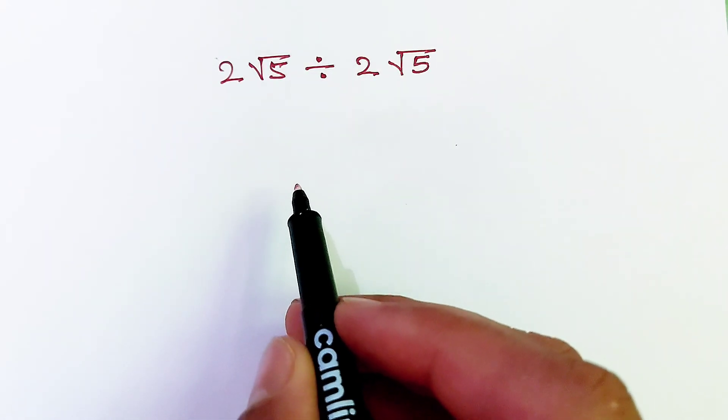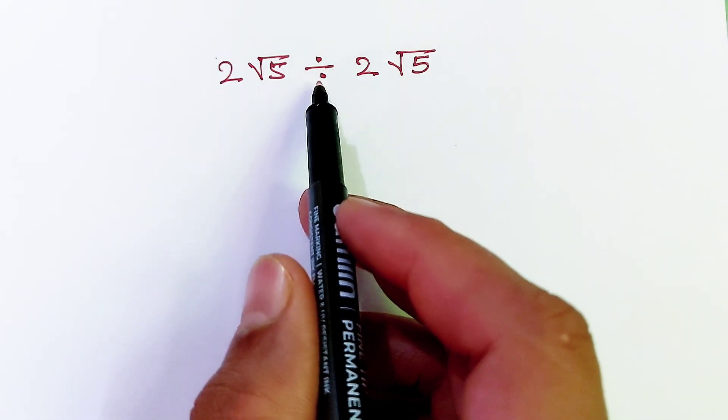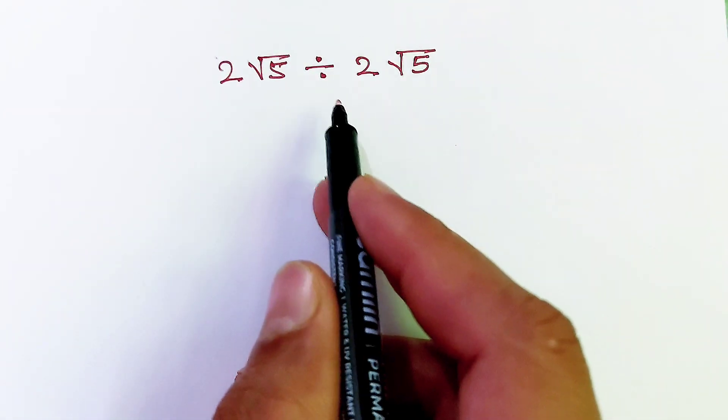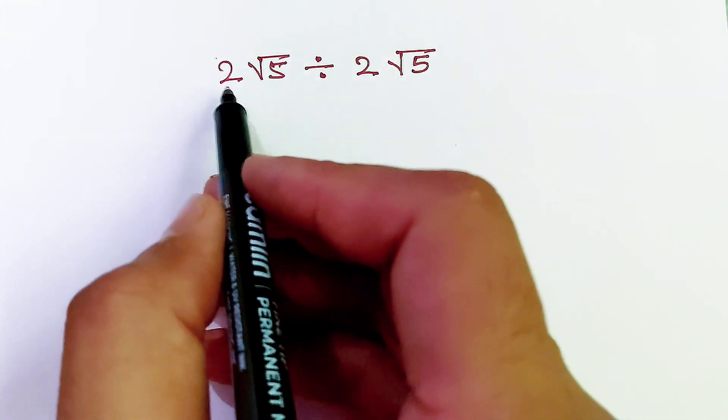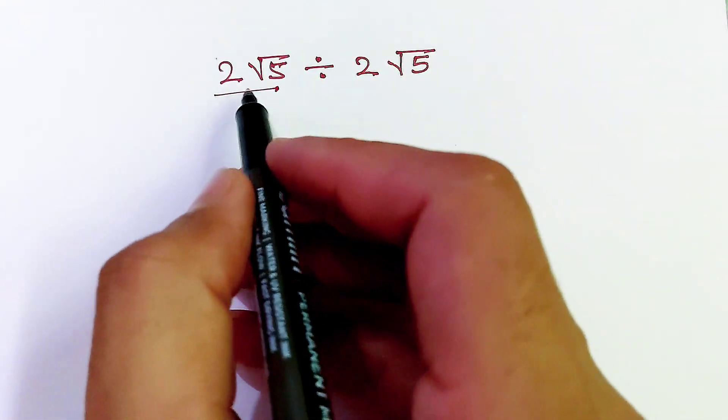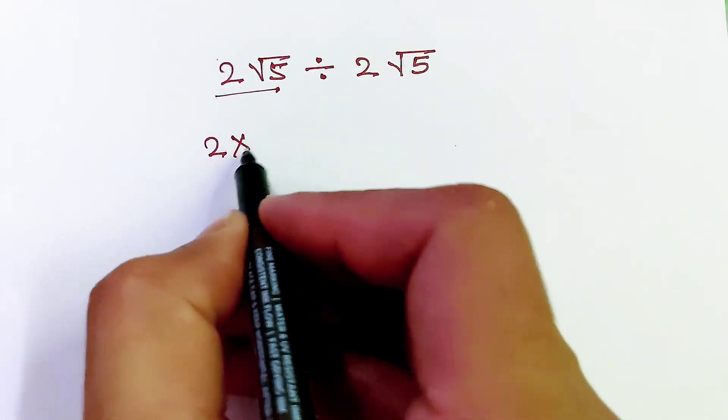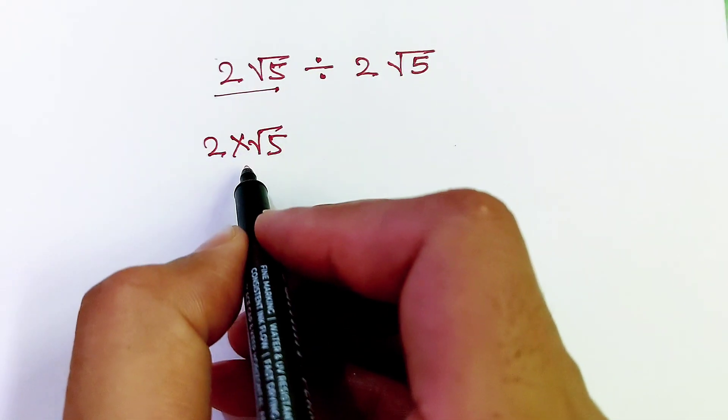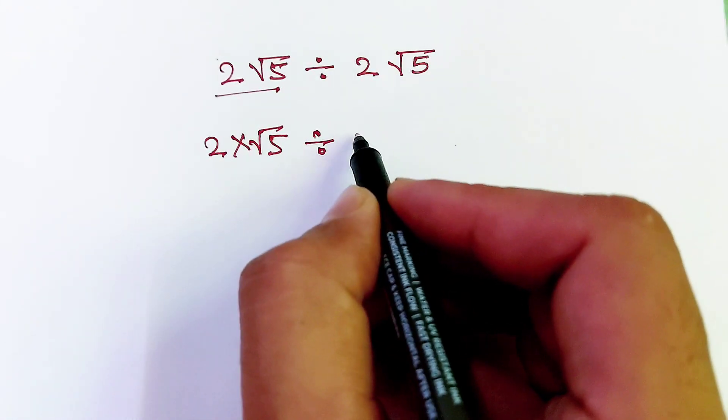Hello, so here the question is 2 multiply root 5 divided by 2 multiply root 5. We have to find the solution of this expression. First of all, this is not a single term, please keep it in mind. This is 2 multiply root 5. We can write this like this and divide by 2 multiply root 5.